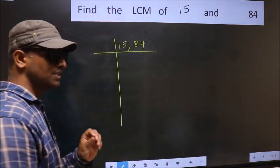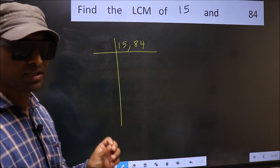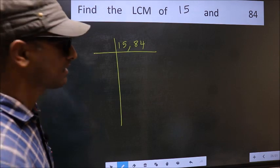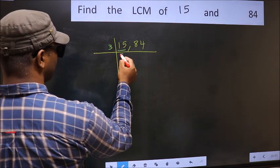This is your step 1. Now you should focus on the first number, which is 15. 15 is 3 times 5, equals 15.